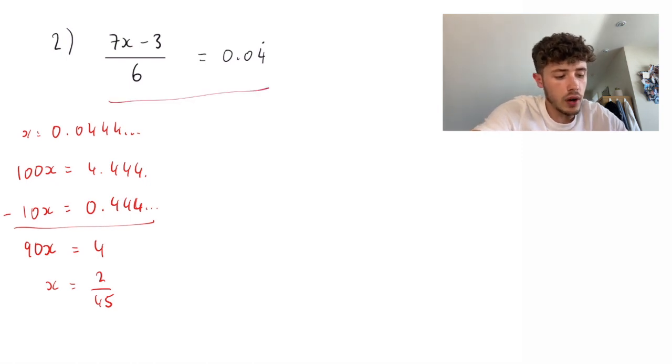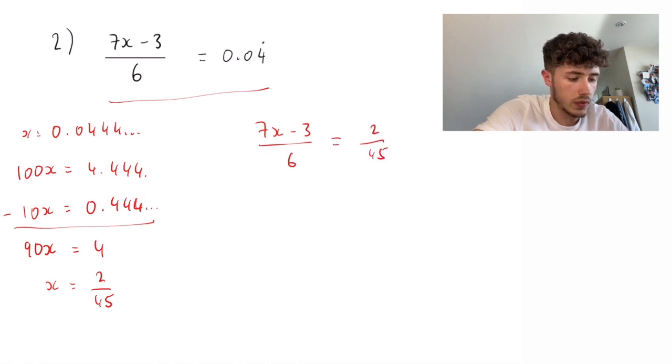If we then rewrite our original equation, we're going to have 7x minus 3 over 6 equals 2 over 45. Now, by a bit of cross-multiplying, we can send the 6 up there and the 45 up there. So, we have 45 bracket 7x minus 3 equals 12.